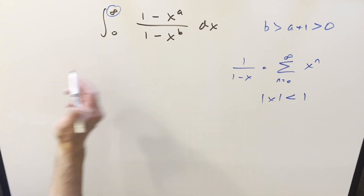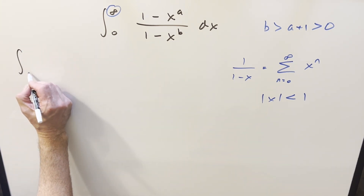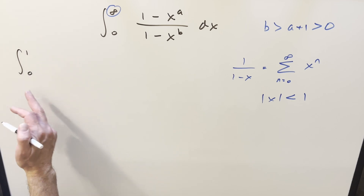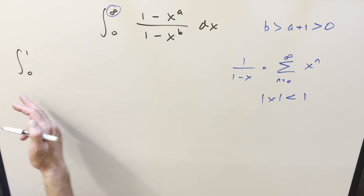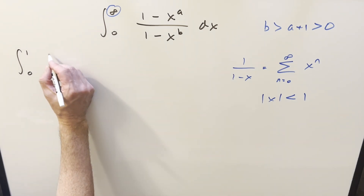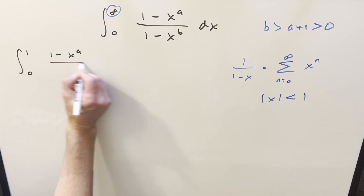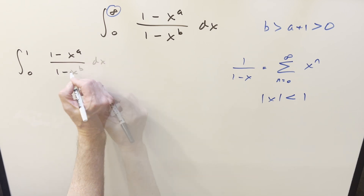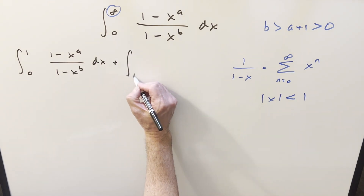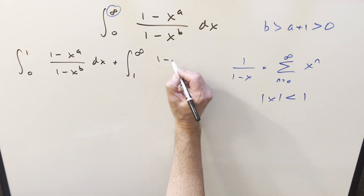So what we do is split this integral into two parts: the first integral going from 0 to 1, and the second part going from 1 to infinity.